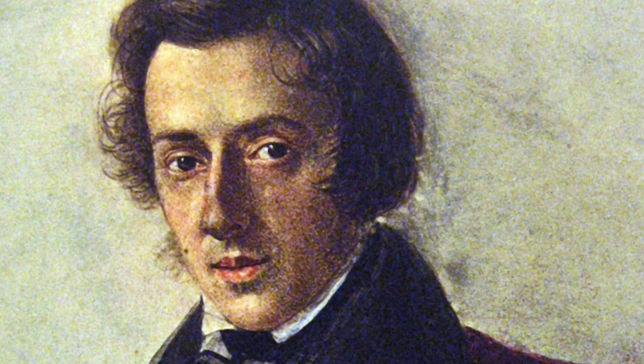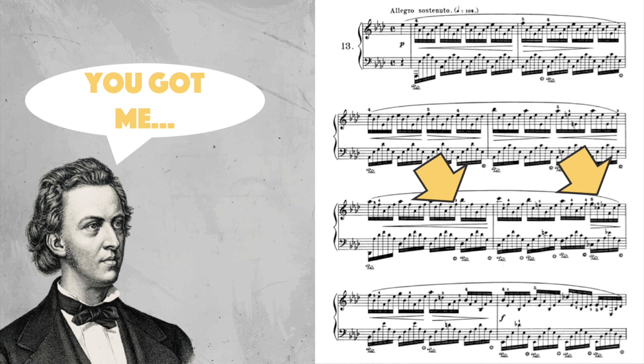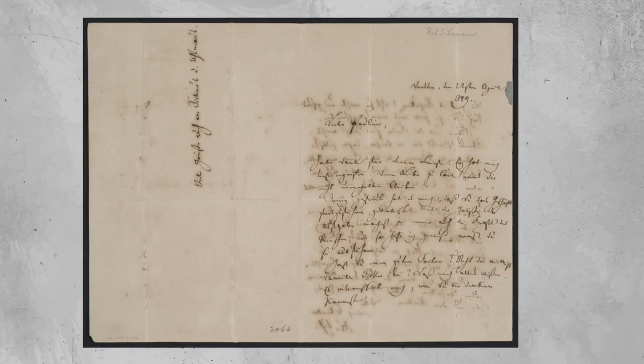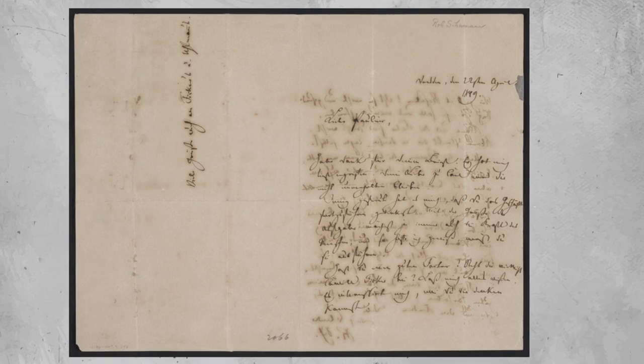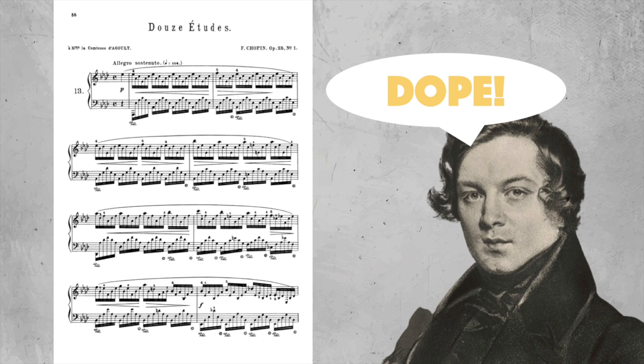Chopin actually could be named as a fan of this type of modulation as well. As a given example, let's check out the first page of the famous A-flat study from Opus 25, where he uses a very similar device two times successively to initiate key changes. As far as I know from Schumann's letters, this is one of the pieces Chopin performed for Schumann in Leipzig in a private session, and especially that piece made a certain impression on him.